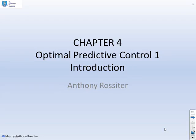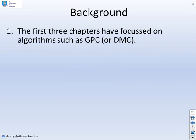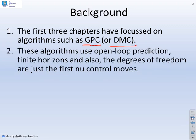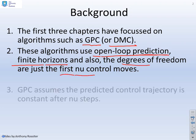The fourth chapter in this video series introduces optimal predictive control. The first three chapters focused on typical finite horizon algorithms such as GPC or DMC. These algorithms use open loop prediction — that's quite important — and finite horizons, primarily for the input horizon but also for the output horizon. The degrees of freedom tend to be written as just the first NU control moves.